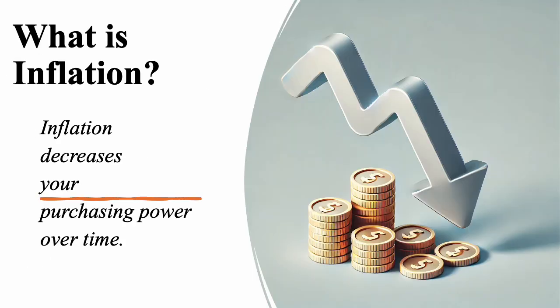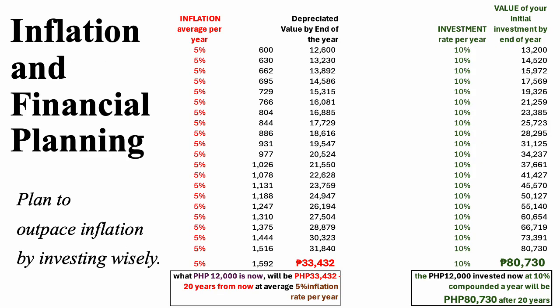Now, let's talk about inflation. Inflation is the increase in prices over time, which decreases your purchasing power. For example, a basket of groceries that cost 100 pesos today might cost 110 pesos next year due to inflation. To outpace inflation, we need to grow our money faster than prices increase. Investing can help, but we need to understand the risks and returns. This is where TVM and compounding can work in our favor. By planning ahead and investing wisely, we can make sure our money keeps up with inflation over time.